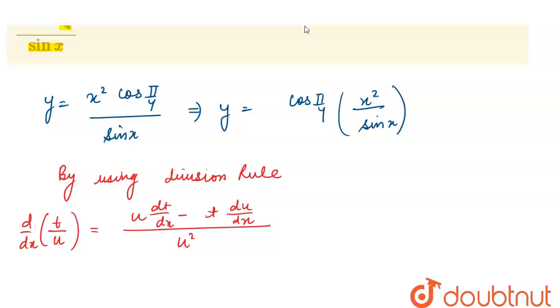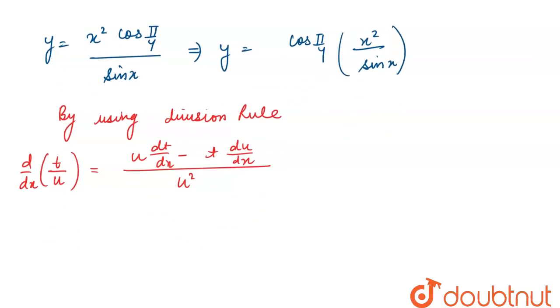So using this we will solve our question. So here by this we will have dy/dx equals to, first of all here we have cos(π/4) as it is, and we are applying division rule in this.